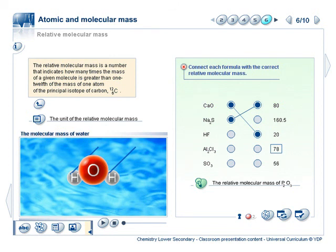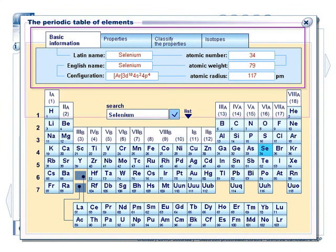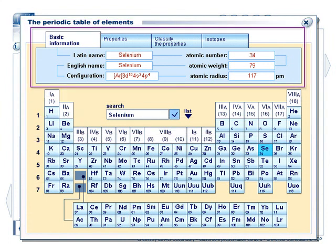The toolkit differs depending on the course. For chemistry, an interactive periodic table with highly developed functions is available. Basic information about each element is given, along with its properties and isotopes.